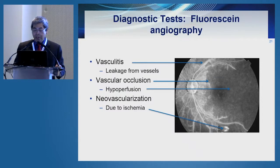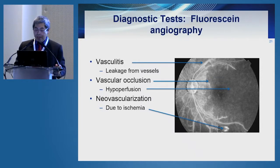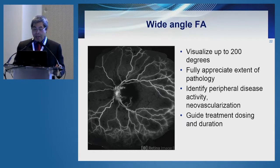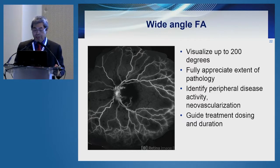A typical diagnostic test for suspected lupus retinopathy is fluorescein angiography, where you can see vasculitis, leakage from the retinal blood vessels, occlusion of arteries and veins leading to hypoperfusion, and if severe, neovascularization due to ischemia. Ultra-wide field fluorescein angiography has allowed clinicians to better visualize the fundus and more fully appreciate the extent of the pathology, identify peripheral disease activity, and potentially guide treatment dosing and duration.